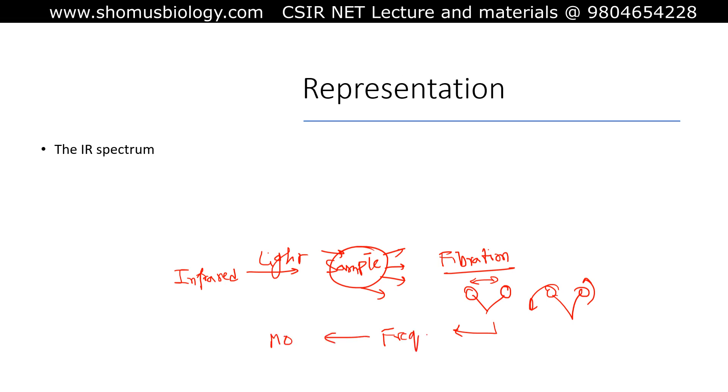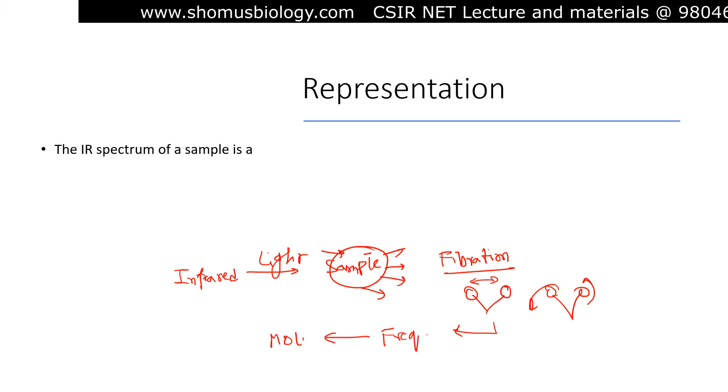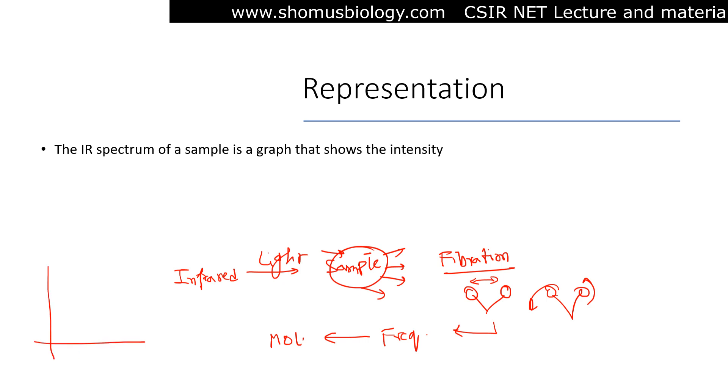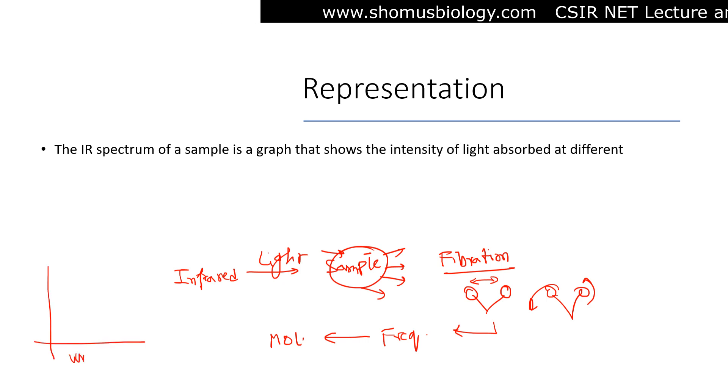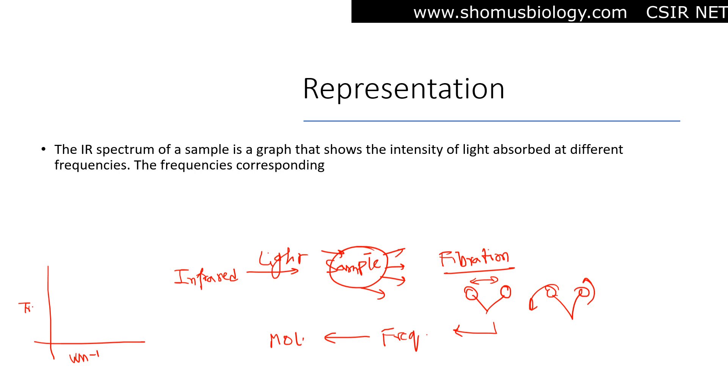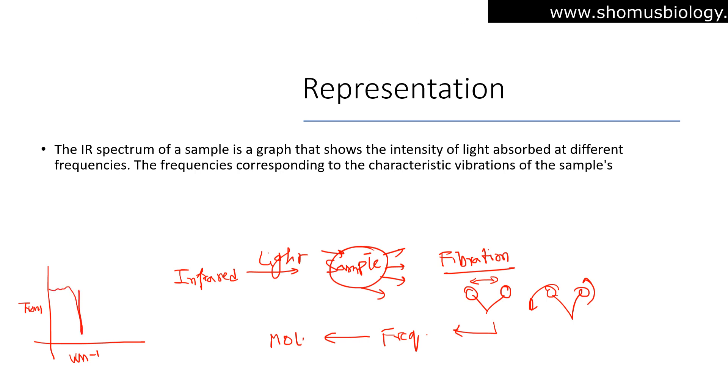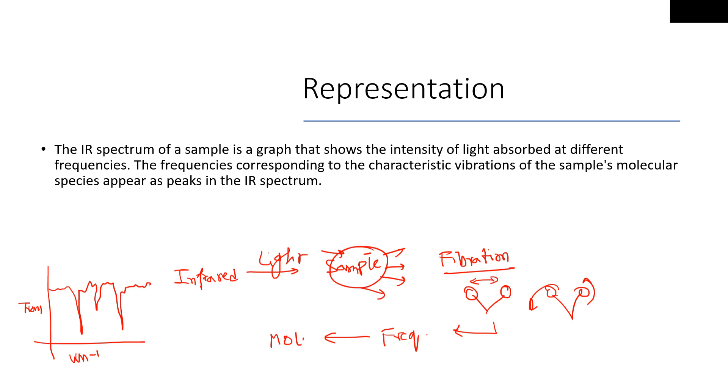The IR spectrum of a sample is a graph that shows the intensity of light absorbed at different frequencies. The frequencies corresponding to the characteristic vibrations of the sample's molecular species appear as peaks in the IR spectrum.